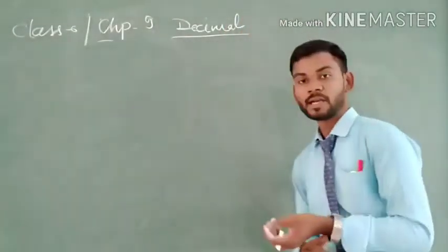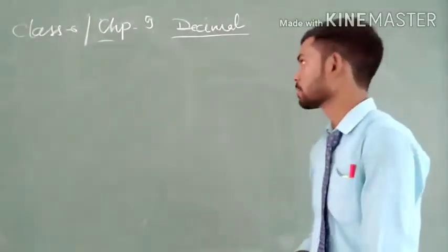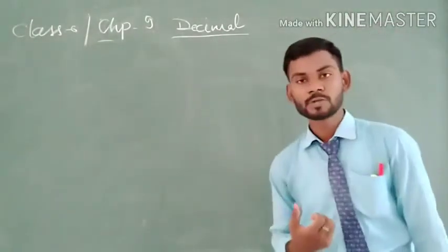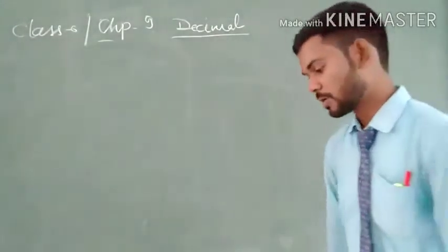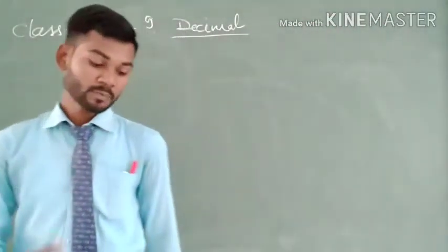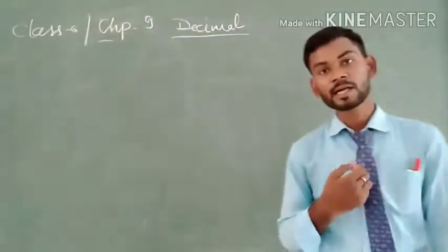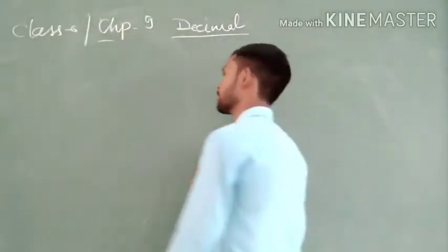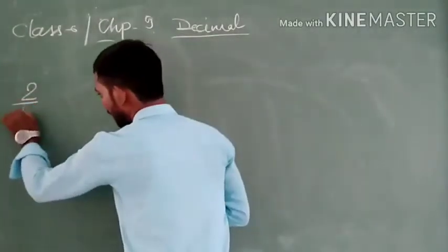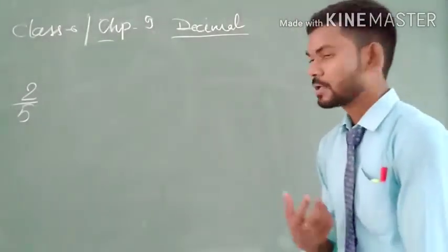So let us see about the decimal of the number. First of all I would like to tell you what is the decimal. As we know that if we write any number like this — 2 upon 5 — if I write a number like 2 upon 5, then if I ask what is the type of this number?